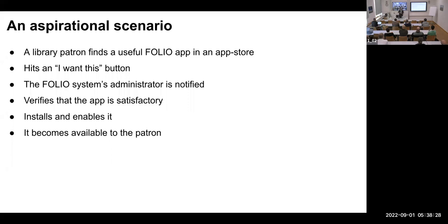Here's an aspirational scenario I'd like to be able to support one day. A small library running FOLIO — one of the users browsing an app store sees that Duke University has released a room booking application and thinks it would be really useful. They hit a button saying 'I want this.' The FOLIO system administrator is notified, goes and checks the module, makes sure it's up to scratch, then installs and enables it from within the app store, making it available to the user. At the moment that feels like a long way away, but this is the kind of thing I would love to support.